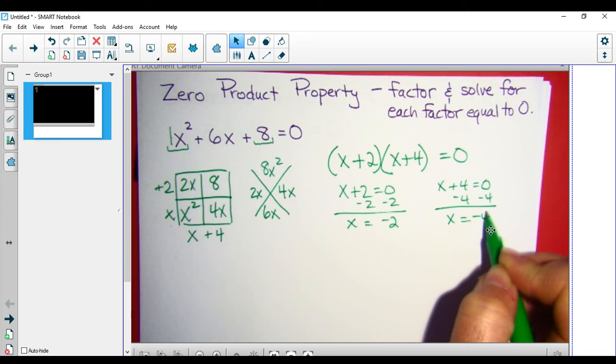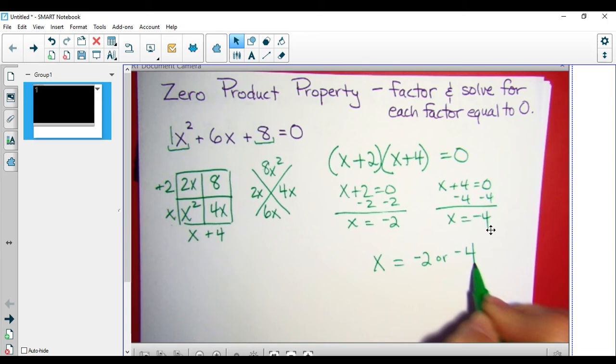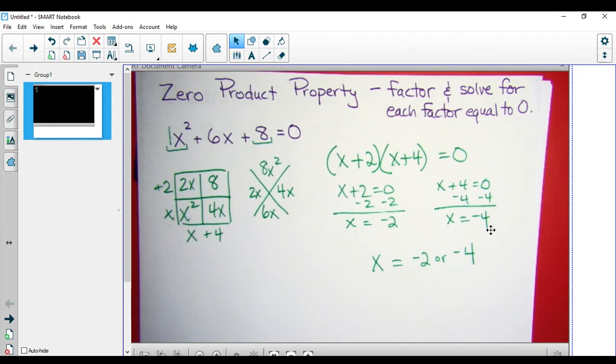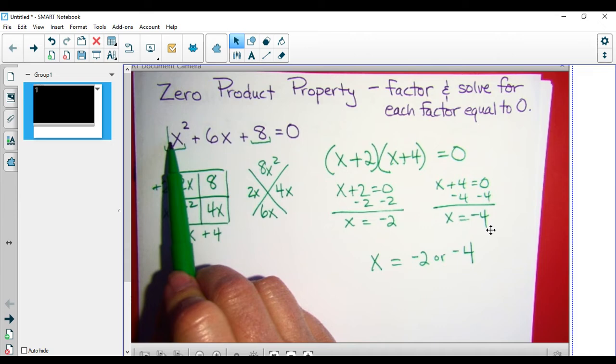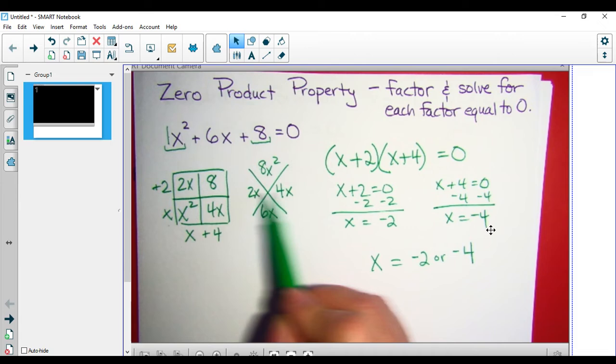So x equals negative 2 or negative 4. When I'm looking at these numbers trying to decide if it's going to be factorable, like I said, I may just look at if I multiply my first term and my third term, I can fill in that diamond problem right away. Do I think I'm going to be able to come up with a combination of factors?